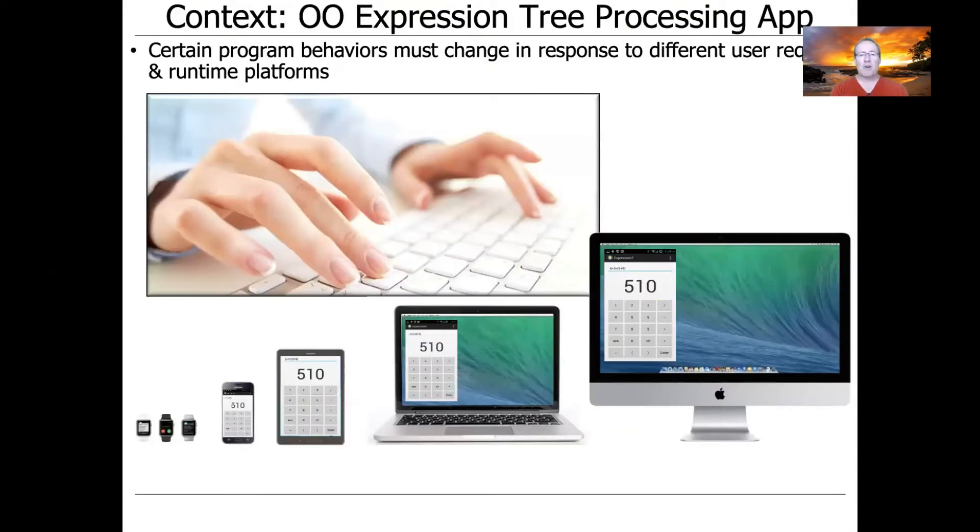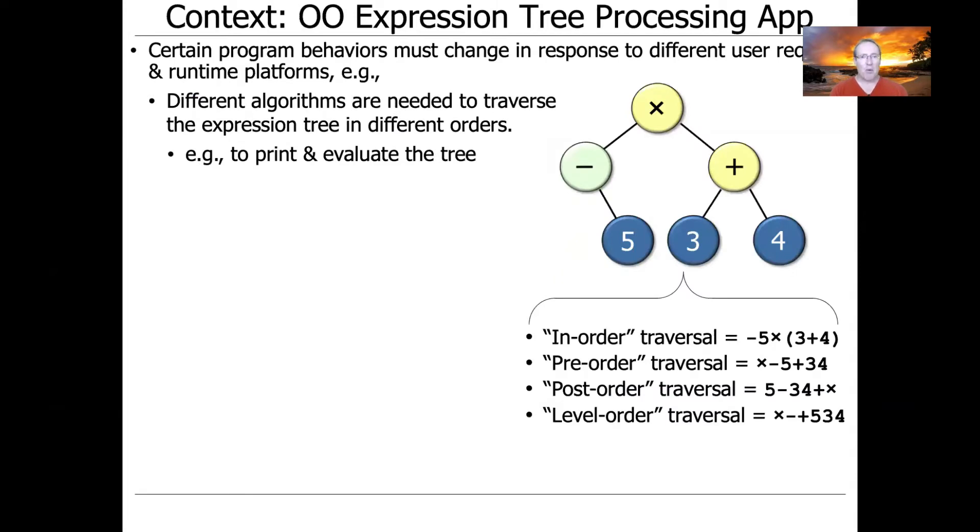So certain program behaviors need to change in response to different user requirements and different runtime platforms. For example, we may want to have different algorithms to traverse the expression tree in different orders, which we'll use to print and evaluate the tree. And we've talked about this a number of times now, so you probably don't need much of a recap, but there's in-order, pre-order, post-order, and level-order traversals. And we want to be able to use them in a way that's completely transparent to the clients.